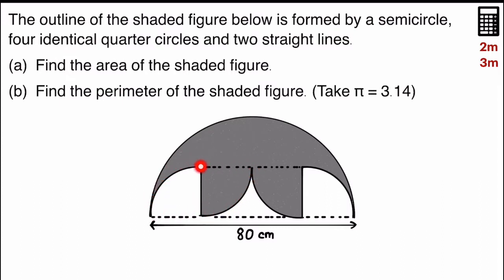and then one here that's in grey. One more here, and one more in white. So these are the four identical quarter circles, and there are two straight lines over here.